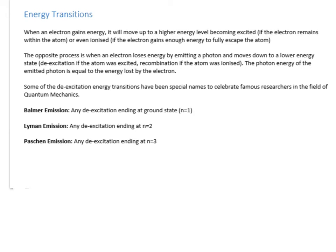Now let's think about how electrons transition between these different energy states. When an electron gains energy it moves to a higher energy level — it becomes excited — and if it gains enough energy it becomes ionized. However, higher energy states are more unstable. So a process called de-excitation occurs: the electron moves down energy levels and, to conserve energy, emits a photon carrying the energy it has lost. For example, moving from n equals 3 to n equals 1 emits a photon of energy equal to that transition, maintaining conservation of total energy.